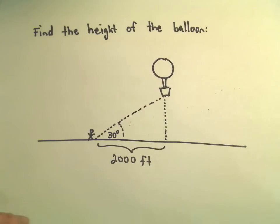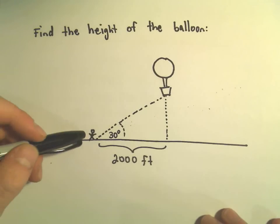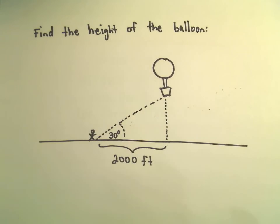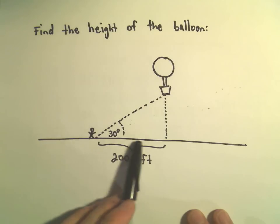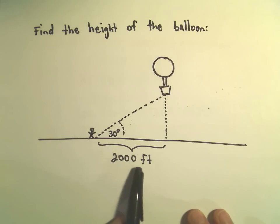Suppose you're watching a balloon go up in the air. Suppose that you're able to measure the horizontal distance from you to the balloon, and that's 2,000 feet.